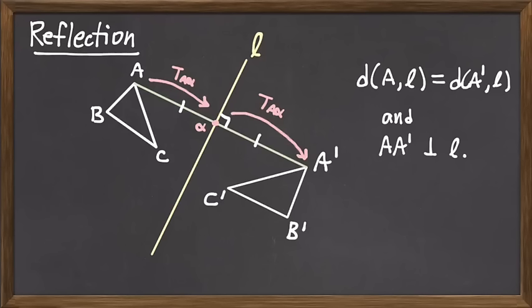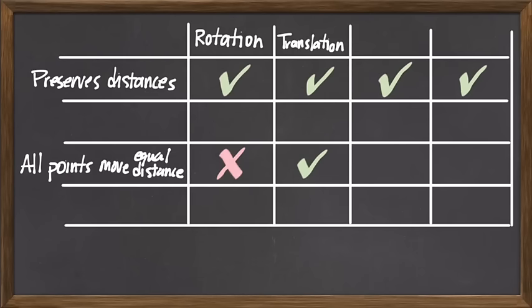Reflection is an isometry — it preserves all of the distances between points. But does it move all points at equal distance? No. Points closer to the mirror move less than points further away. So in our chart, reflections get a big X in the 'moving points at equal distance' column. In that respect, rotations and reflections have a lot in common. So what's different between rotations and reflections?